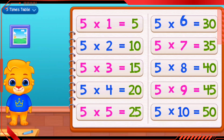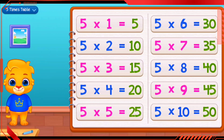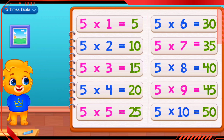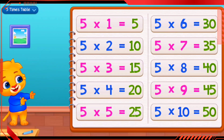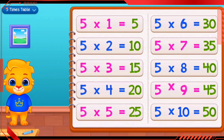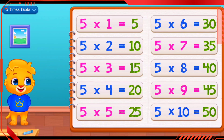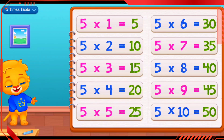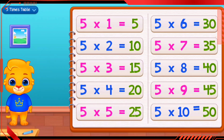5 times 6 equals 30. 5 times 7 equals 35. 5 times 8 equals 40. 5 times 9 equals 45. 5 times 10 equals 50.